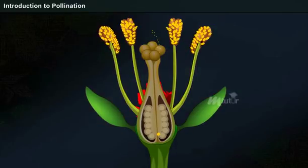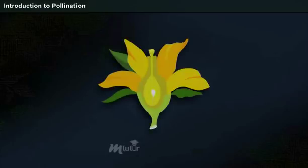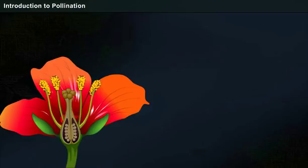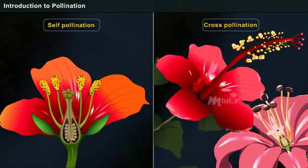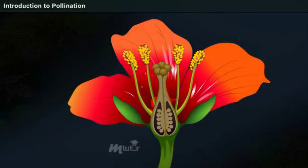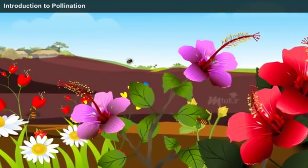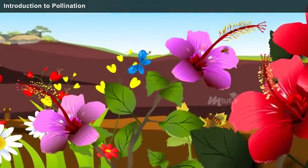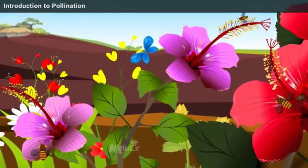This pollination results in the formation of various end products such as grains, vegetables, and fruits. There are two types of pollination: self-pollination and cross-pollination. Self-pollination does not require an external agency to transfer the pollen grains, while cross-pollination requires external agencies like wind or insects to carry the pollen grains from one plant to another.